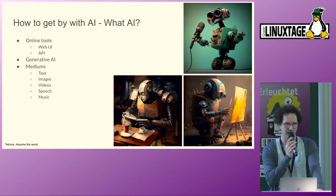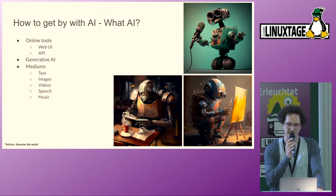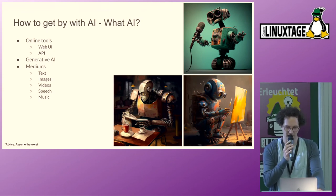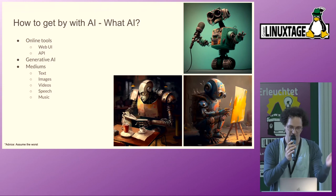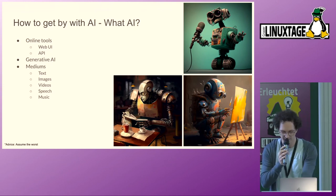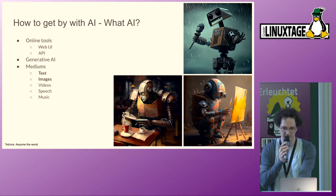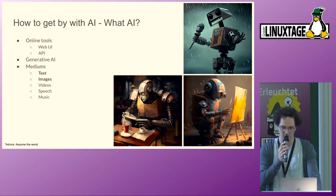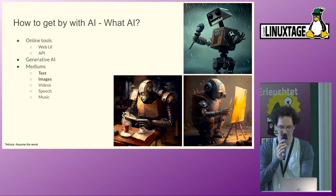You can roughly categorize generative AI by the mediums it works on. For example, we have text, images, videos, speech, and music. However, in this talk we're only going to be focusing on text and image tools to keep the scope a little bit down.